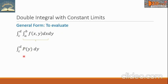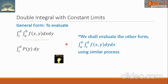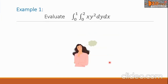Of course, we know how to simplify a definite integral like this. We shall evaluate the other form — the double integral from a to b and from c to d of f(x,y) dy dx — using a similar process. Now look at Example 1: Evaluate the double integral from 0 to 1 and from 0 to 2 of the function xy² dy dx.